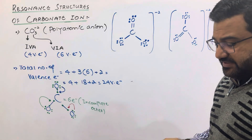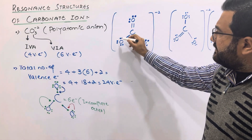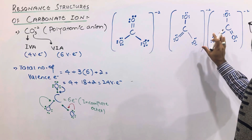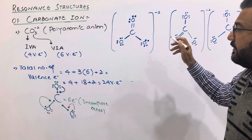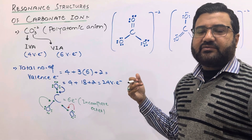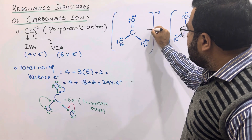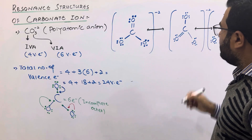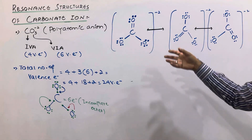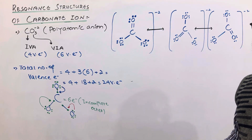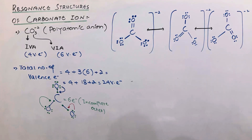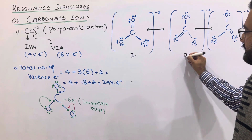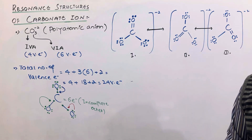These are the 3 structures. They have equal numbers of atoms, the positions of atoms are also the same, and the total number of electrons in all three structures is also the same. But the bonding arrangement is different due to the shifting of lone pairs of electrons. Such structures — in which the number of atoms, total number of electrons, and positions of all nuclei are the same, but the bonding arrangement differs due to lone pair shifting — are called resonance structures. So carbonate ion has 3 resonating structures.